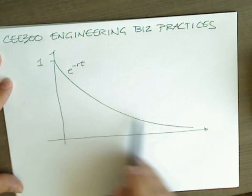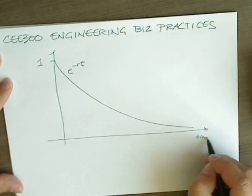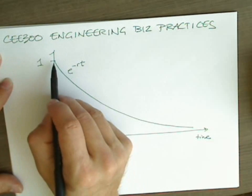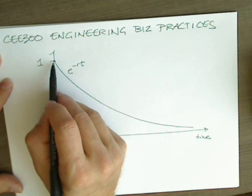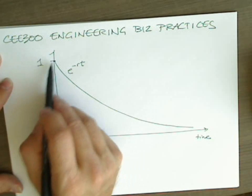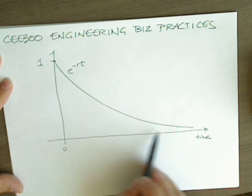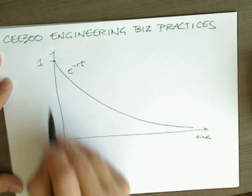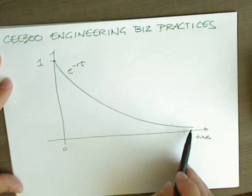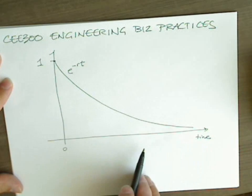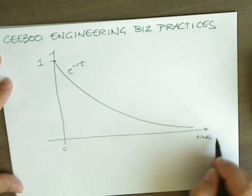This is the same formula that we use for radioactive decay. It intersects the y-axis at one, because there is no discount factor for a present payment, and then it monotonically declines asymptotically approaching zero at time equal to infinity.